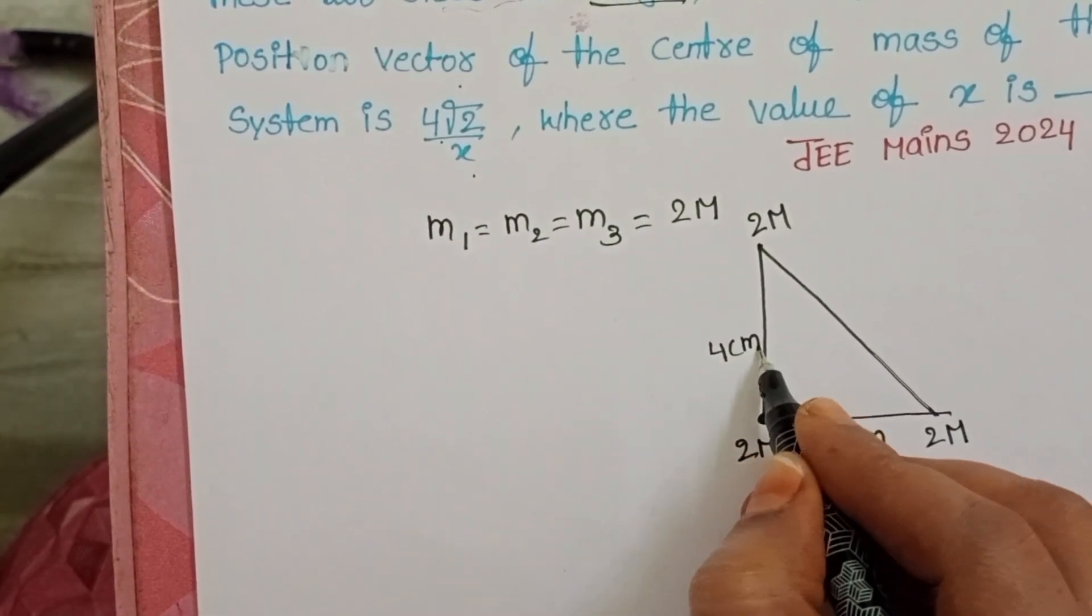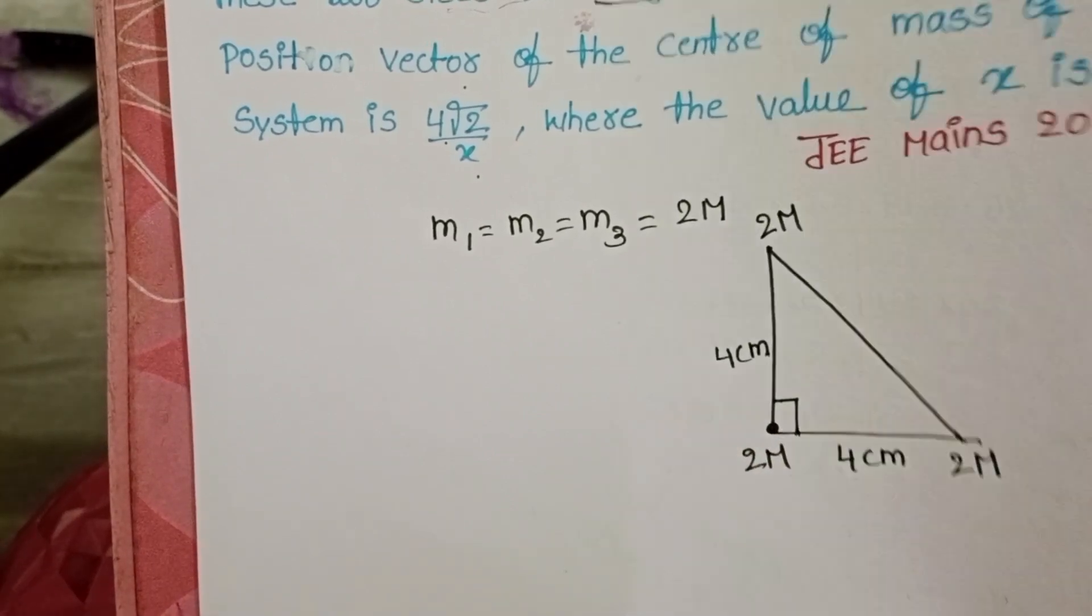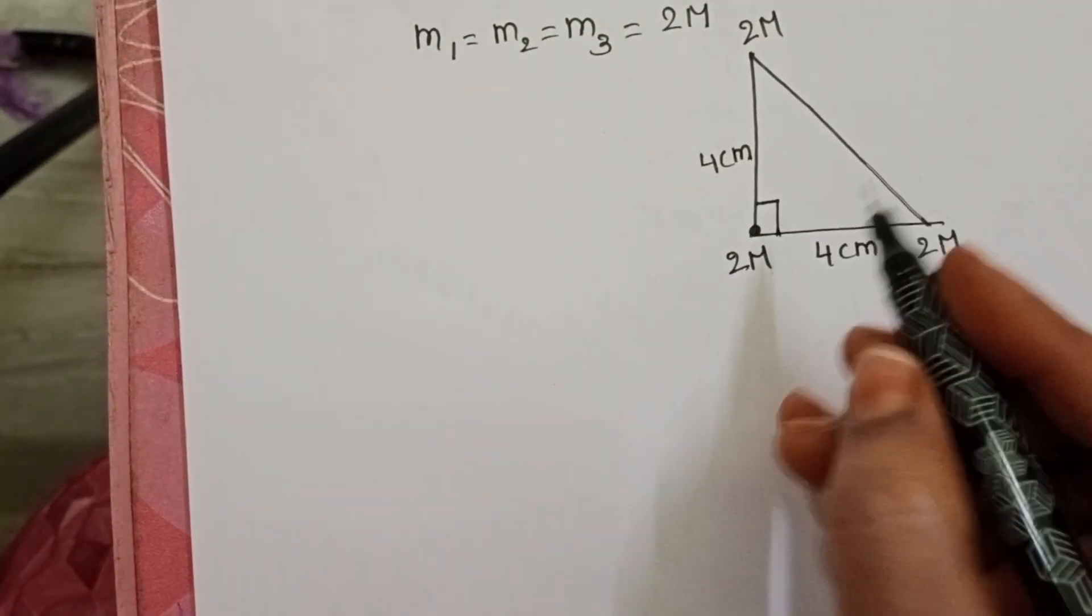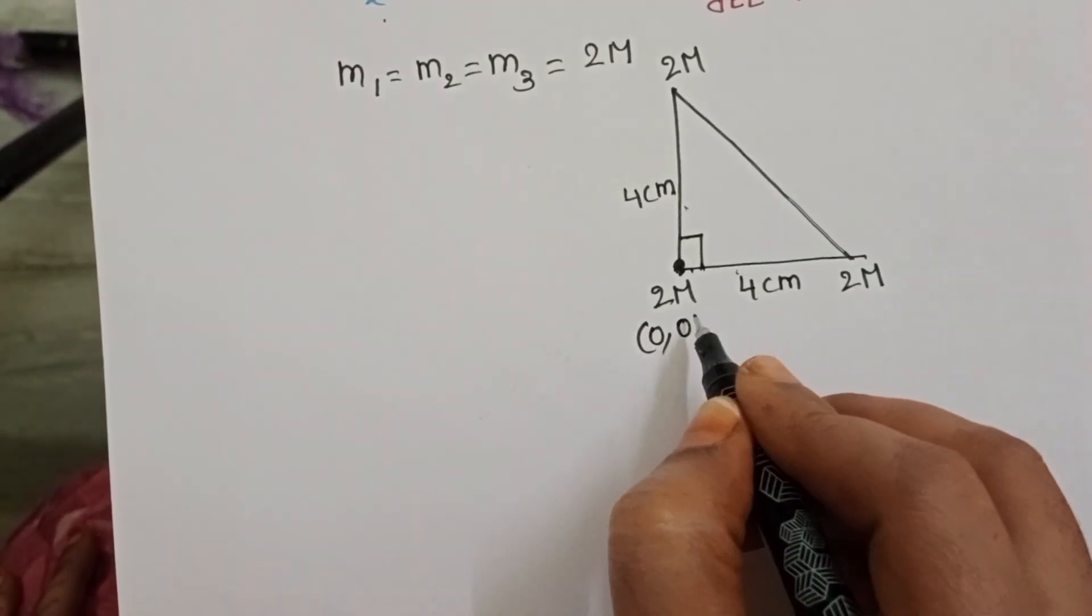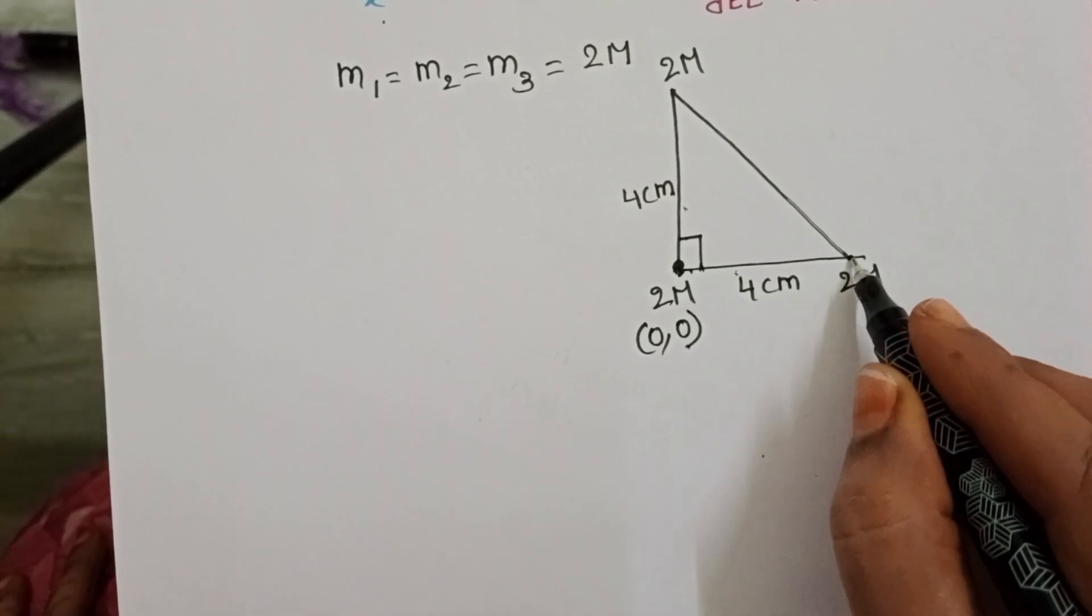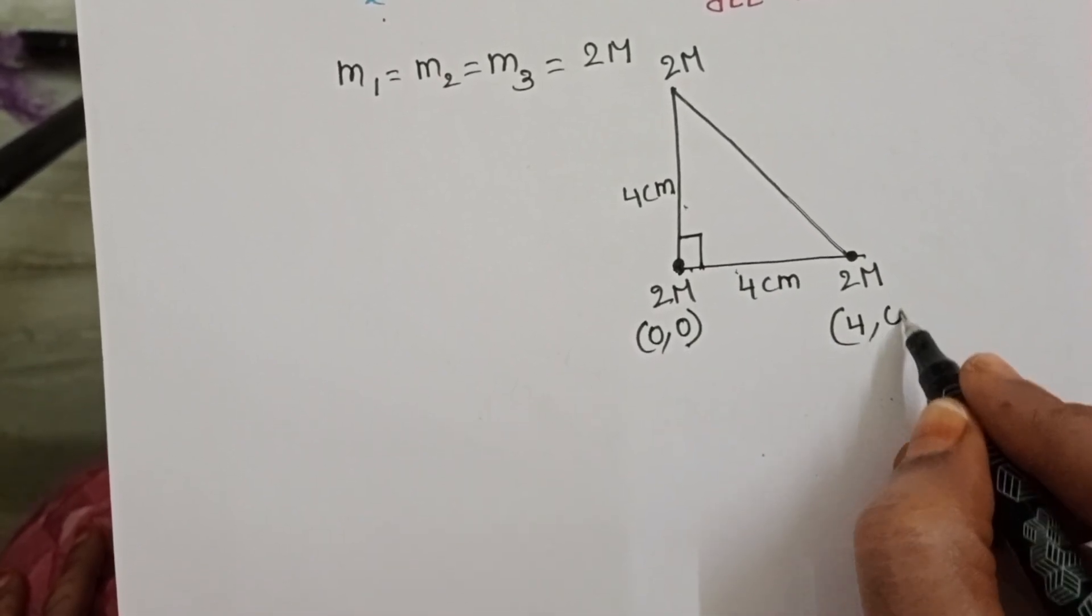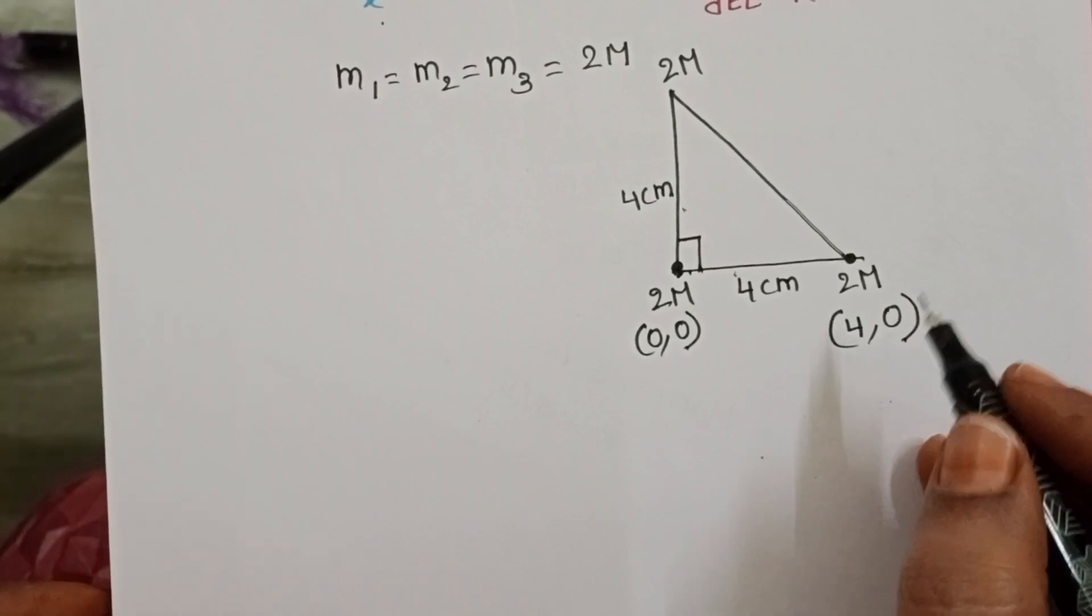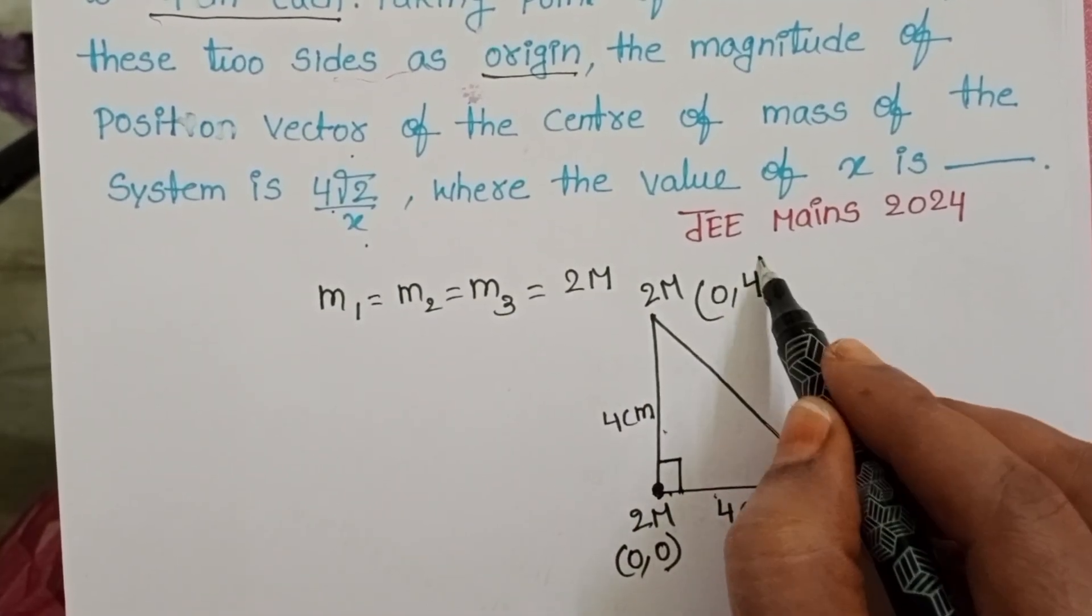First, we have to find out the position of center of mass of the system. The coordinates of the first mass, this is at origin. x-coordinate is 0 and y-coordinate also 0. At this point, x-coordinate is 4 and y is equals to 0. Here, x-coordinate is 0 and y is equals to 4.